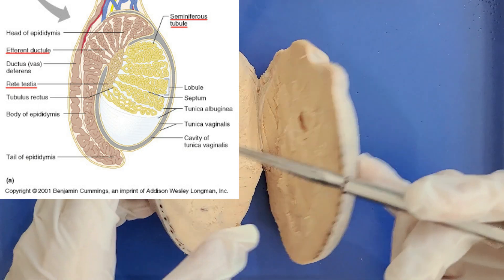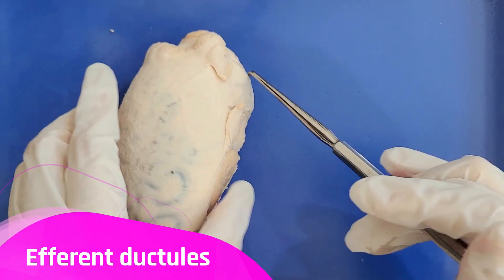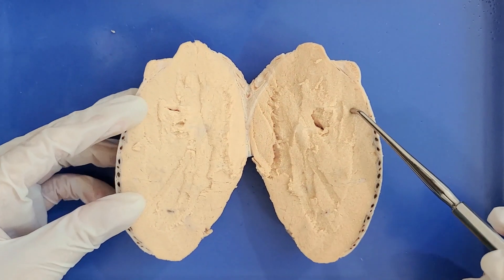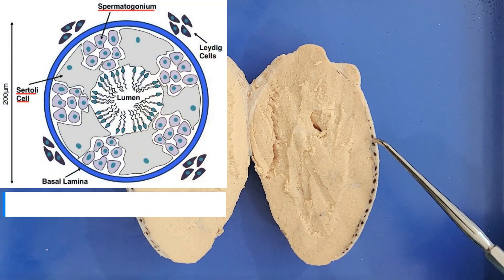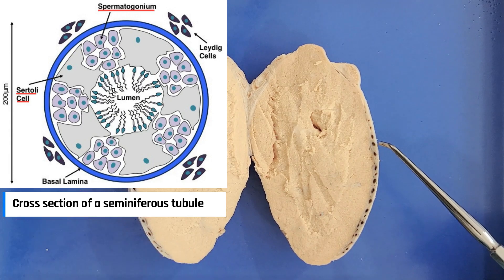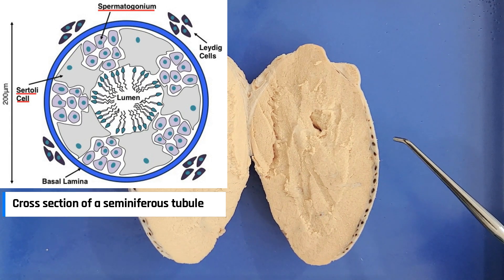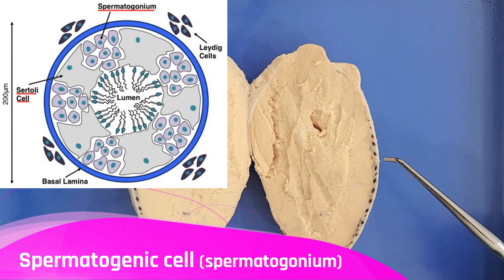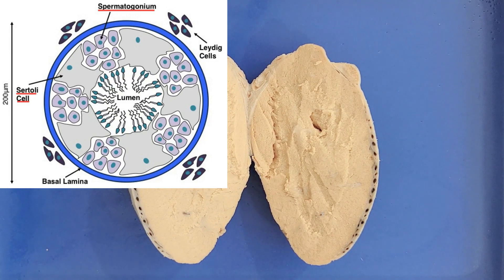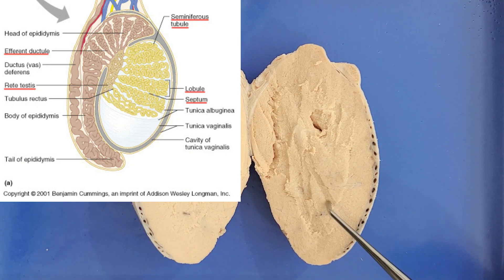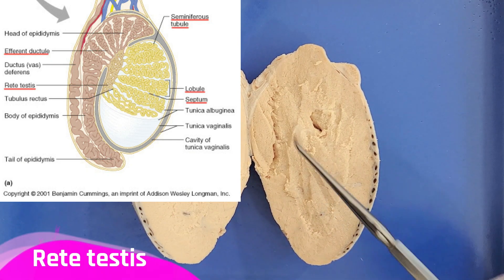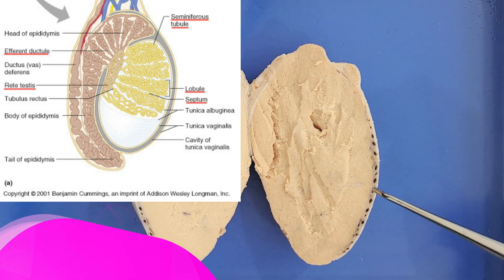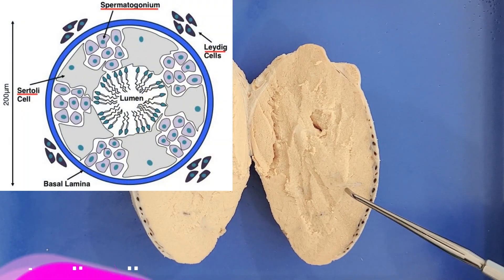The rete testis then leads into the epididymis through the efferent ductules we saw earlier. The seminiferous tubules are lined with Sertoli cells — tall columnar cells that nourish and support developing sperm cells. In between the Sertoli cells are spermatogenic cells, which are germ cells that divide and differentiate to form sperm cells. After sperm cells are produced in the seminiferous tubules, they travel to the rete testis, then into the epididymis. In between the seminiferous tubules are Leydig cells, which produce the sex steroid hormone testosterone.